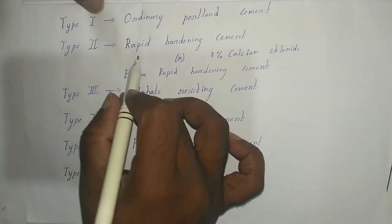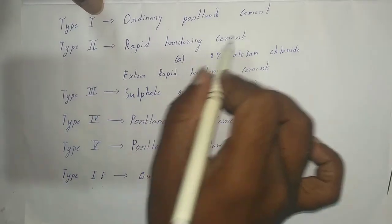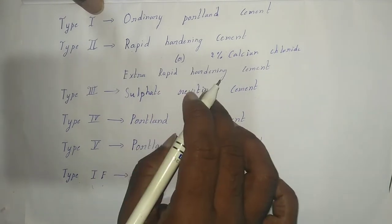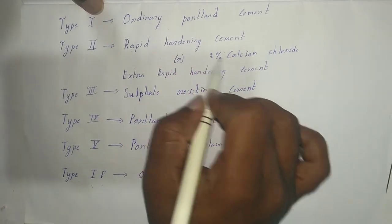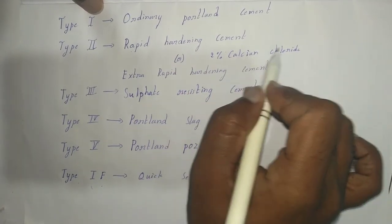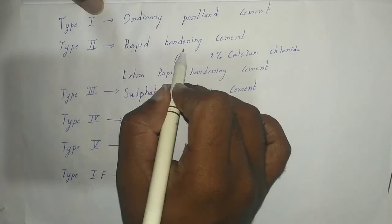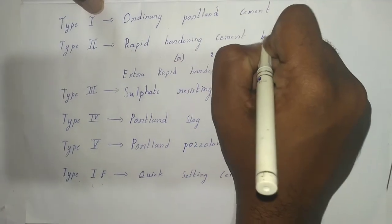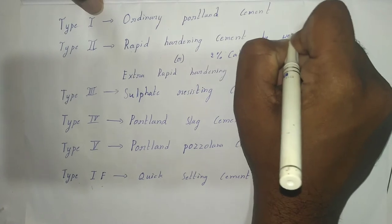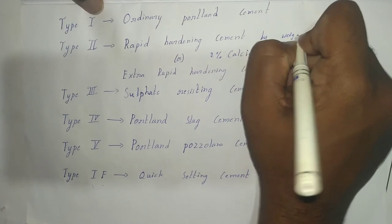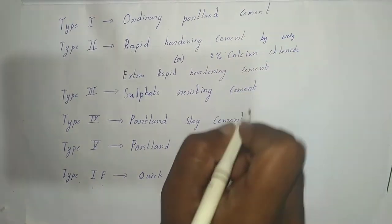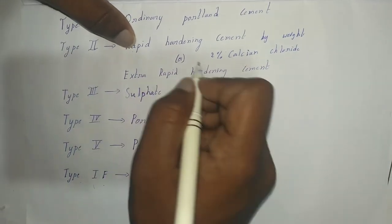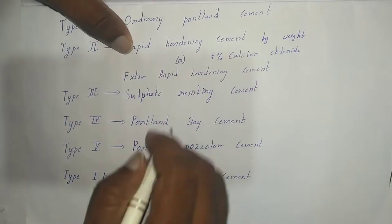Type 2 Cement is Rapid Hardening Cement or Extra Rapid Hardening Cement. By adding 2% of calcium chloride to Rapid Hardening Cement by its weight, it converts into Extra Rapid Hardening Cement.